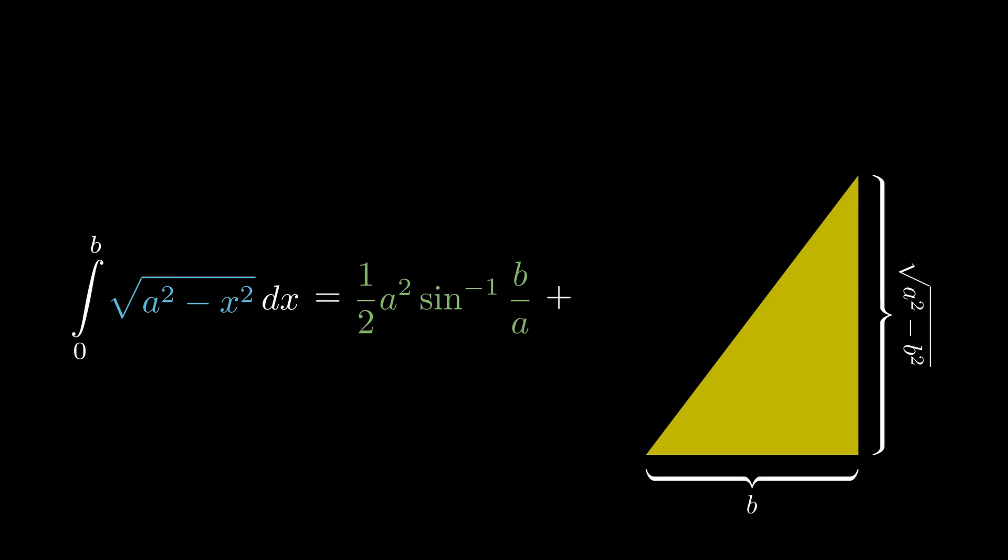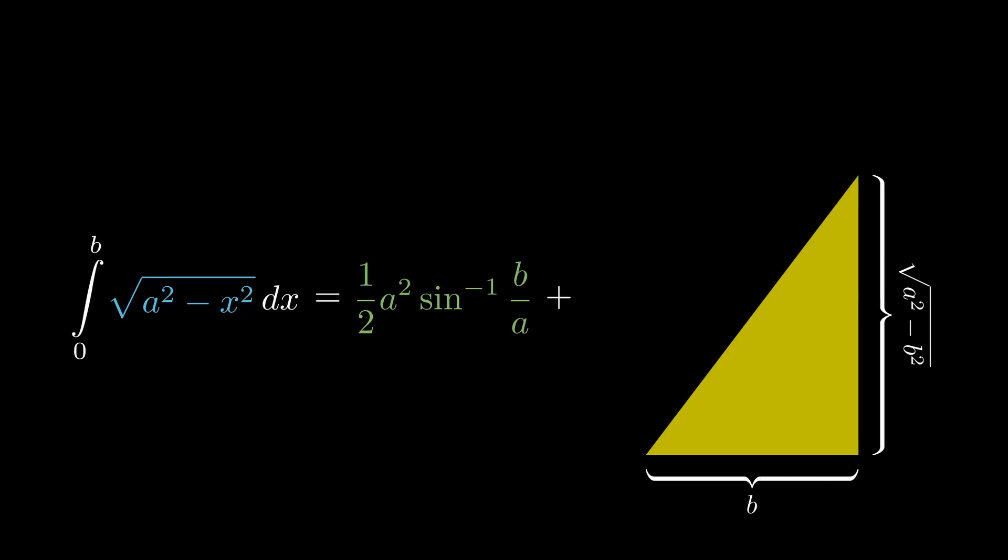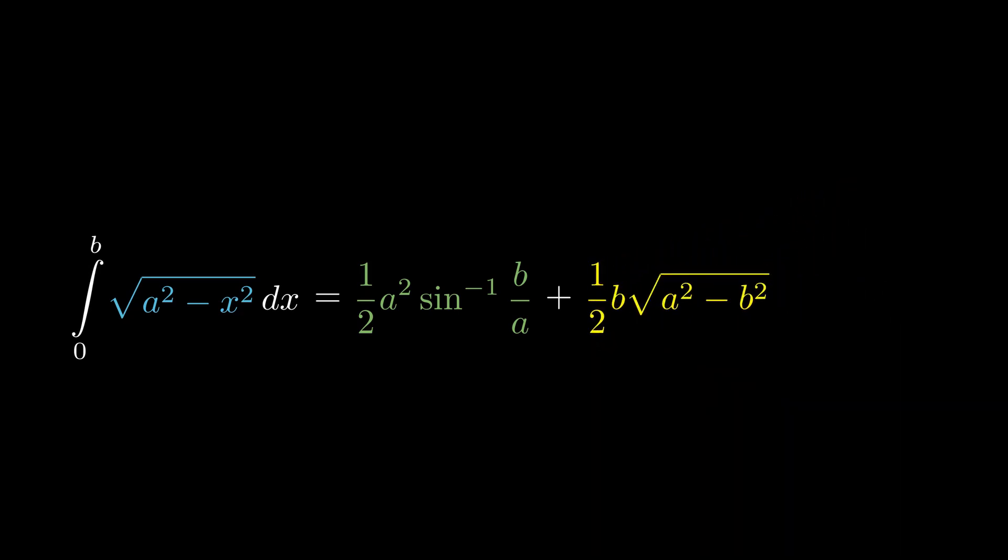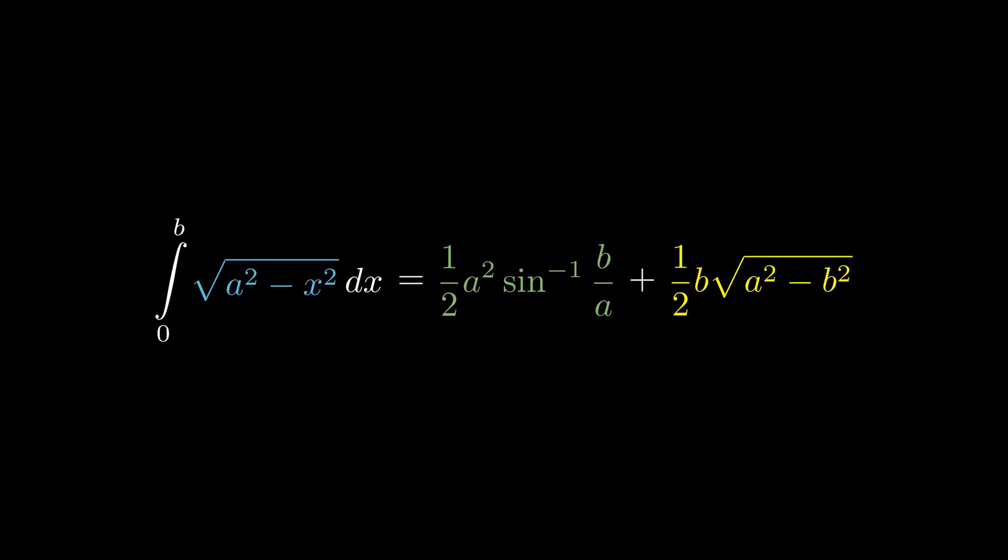The triangle has base b and height square root of a squared minus b squared with an area of b by 2 times square root of a squared minus b squared. Adding these two areas solves the integral without using any calculus at all.